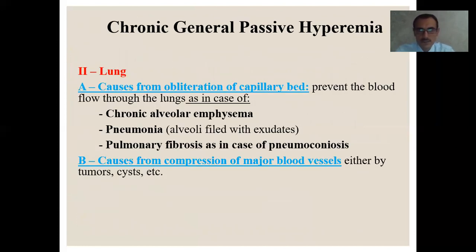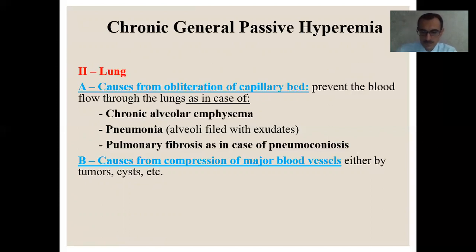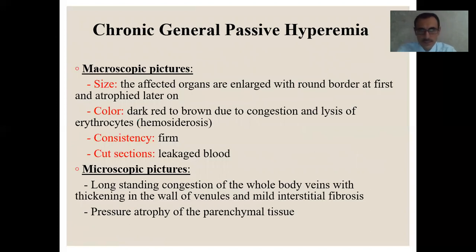The second organ affected is the lungs. First, causes of obliteration of the capillary bed prevent blood flow throughout the lungs, as in chronic alveolar emphysema, pneumonia — where alveoli fill with exudate — and pulmonary fibrosis as in pneumoconiosis. Also causes from compression of major blood vessels by tumors, cysts, etc. Macroscopically during chronic general passive hyperemia, the affected organs are enlarged with rounded borders at first. Color is dark red to brown due to congestion and lysis of erythrocytes, where hemosiderosis develops. Consistency is firm and cut sections leak a lot.